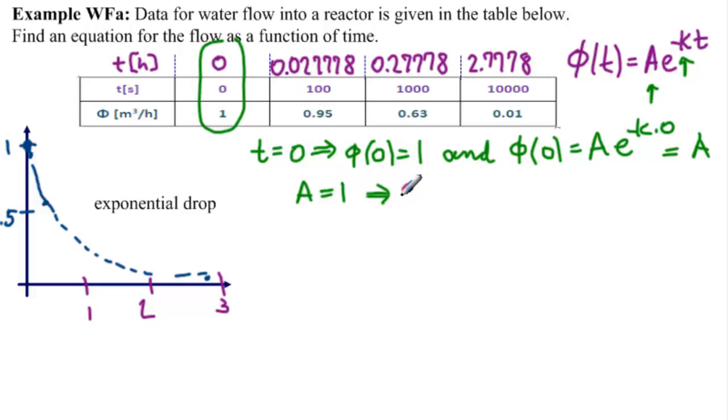And we can rewrite our function that we're solving as phi of t equals E to the minus k times t. And we still need to find k.